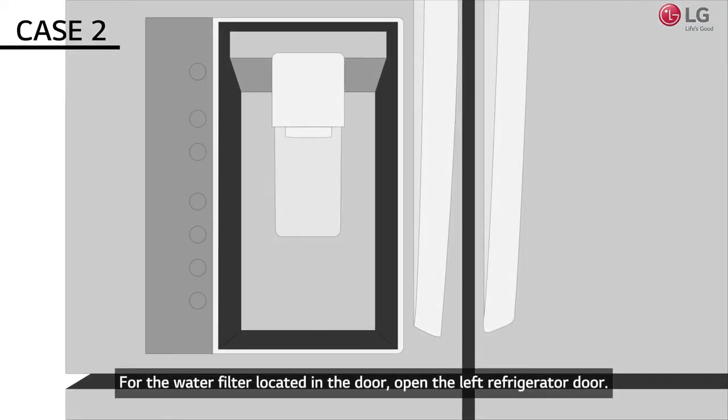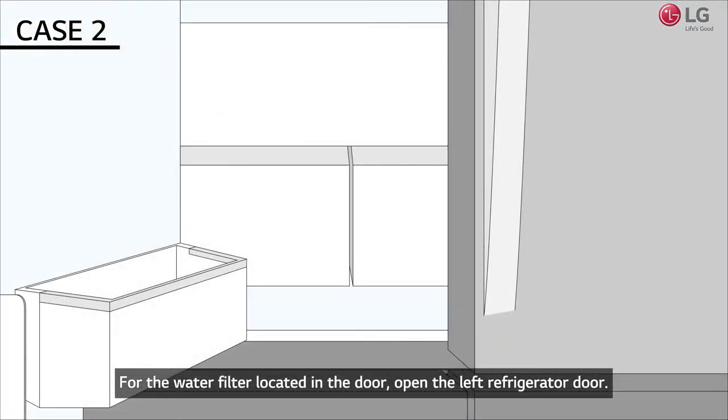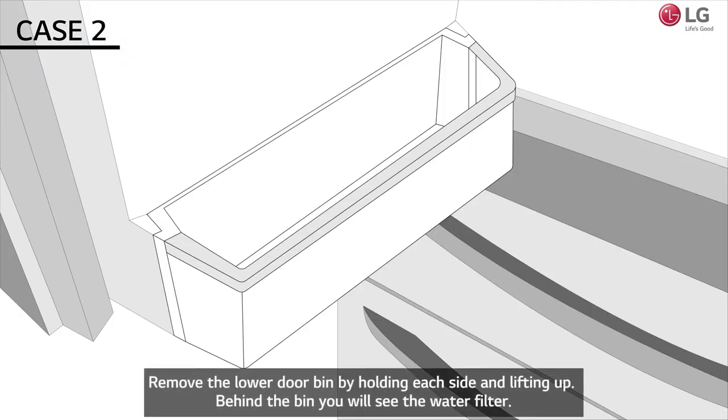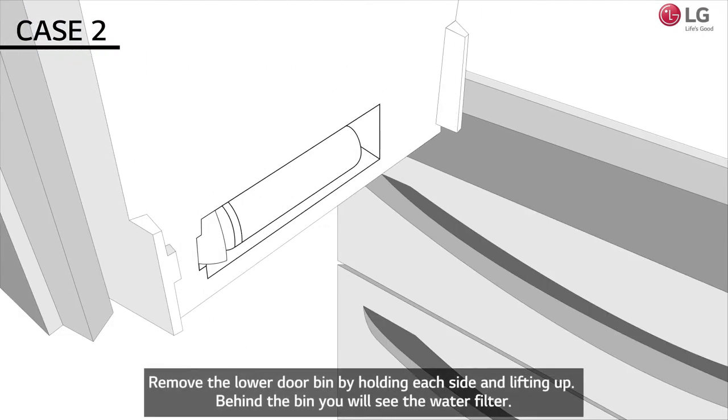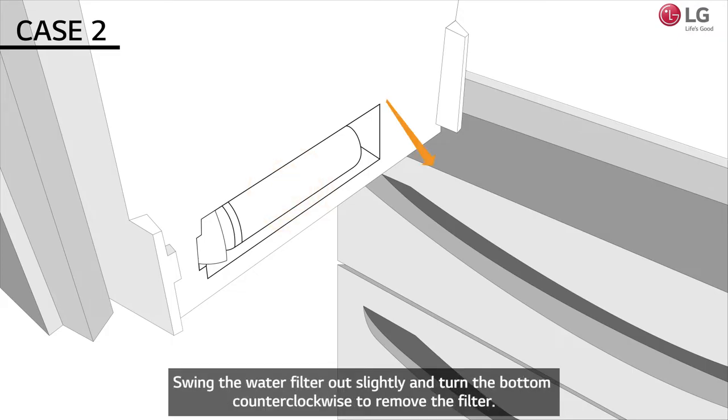For the water filter located in the door, open the left refrigerator door. Remove the lower door bin by holding each side and lifting up. Behind the bin you will see the water filter. Swing the water filter out slightly and turn the bottom counterclockwise to remove the filter.